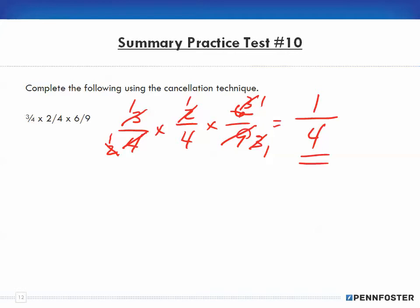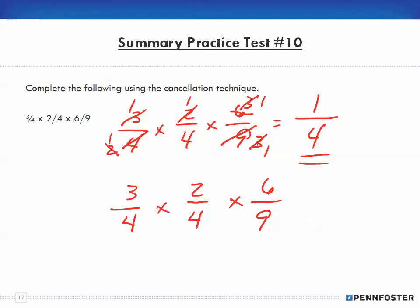Let me quickly do that again: three-quarters times two-fourths times six-ninths. There's no right or wrong way to do this. I started with taking the three and the nine, but I could have started by reducing two over four to lowest terms — two into two goes once, two into four goes two times — and then done the same with six and nine: three goes into six twice, three goes into nine three times. I used a different order, but the cancellation technique has no required sequence.